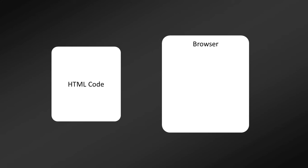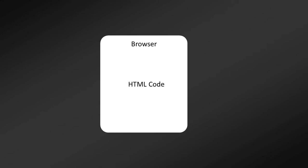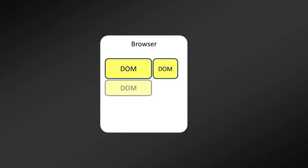Let's overview how the Document Object Model works. HTML is a simple set of instructions that the browser follows when constructing the Document Object Model, or DOM. The elements that make up an HTML document become DOM elements when the browser loads HTML and renders the user interface.